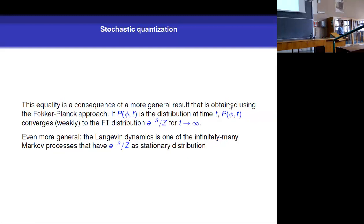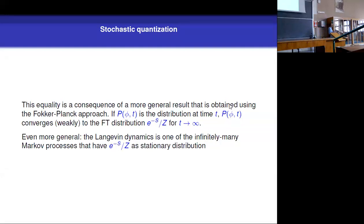This result follows from the Fokker-Planck equation, which tells you that the probability distribution at time t converges to the field theory distribution as t goes to infinity. There is nothing special about Langevin dynamics specifically — any Markov process that has the field theory equilibrium distribution as its stationary distribution will give exactly the same result.